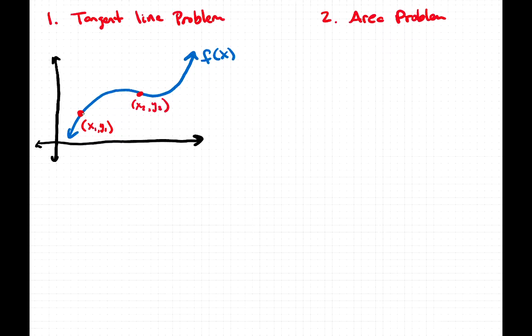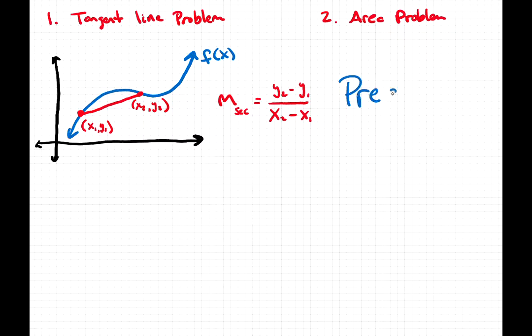Can we find the slope of the secant line, or the slope of the line that connects these two points? If you've taken algebra or pre-calculus, you should be able to apply the slope formula. The slope of the secant line equals y2 minus y1 divided by x2 minus x1. This is pre-calculus.